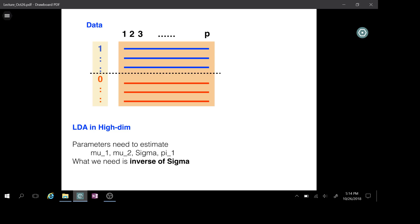Here are the parameters we need to estimate for LDA. They are mu1, the average of those blue lines, p-dimensional. And mu2 would be the average of those red lines, which basically are mu0. We have sigma, the p by p within class covariance matrix estimated based on the data. We have pi1, which is the percentage of Y being 1.